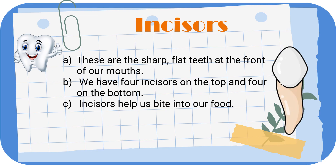The first one in the list is incisors. These are sharp flat teeth at the front of our mouth. They are eight in totality. Incisors help us bite our food.